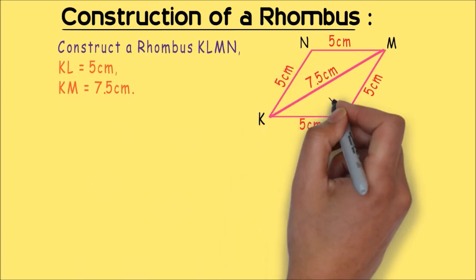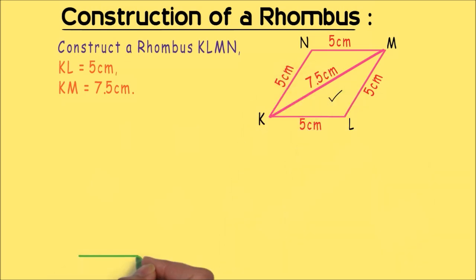Now, let's complete the first triangle. Since we have the measurements of the quadrilateral where KL is equal to 5 cm, with center L and radius 5 cm, I am drawing an arc.